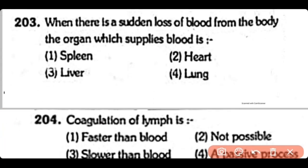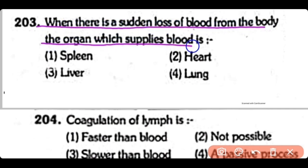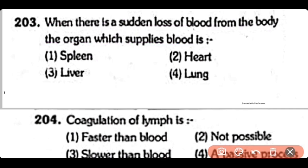Q203. When there is a sudden loss of blood from the body, the organ which supplies blood is the spleen. The spleen is called the blood bank, and if there is blood loss from the body, the spleen supplies blood.